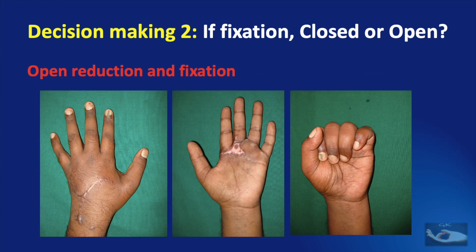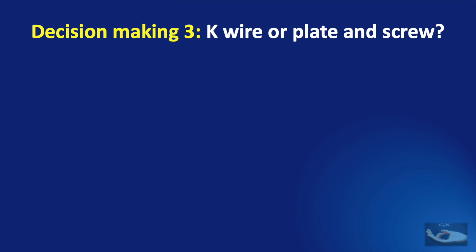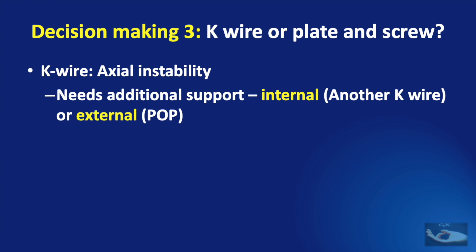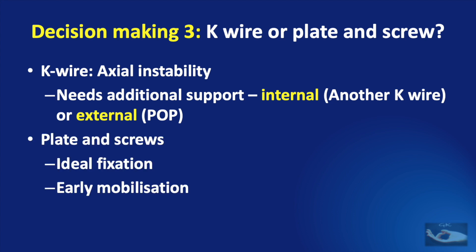The next decision is whether to use a K-wire or plate and screw for fixation. As far as K-wires are concerned, they are easily available and used by a simple technique, but they have an axial instability. So if we use K-wires, we need additional support — either internal in the form of another K-wire, or external in the form of a POP. Plate and screws give ideal fixation and early mobilization can be started, but there is a risk of tendon adhesions as the tendons glide over the plate. Lag screws can also be used in spiral or oblique fractures of the metacarpals.